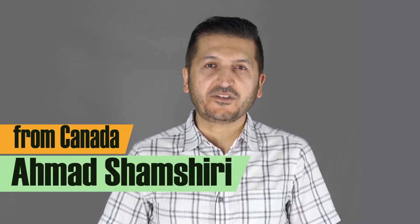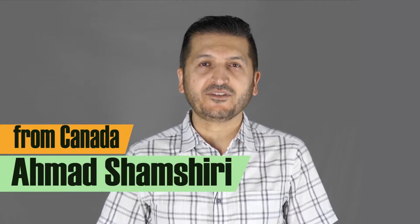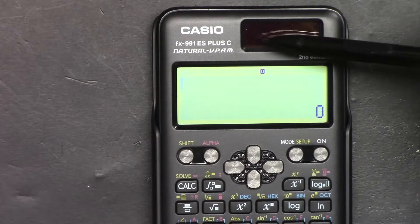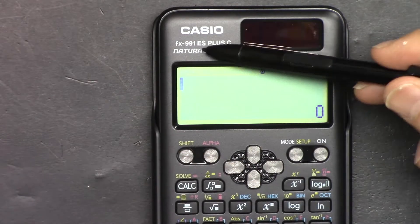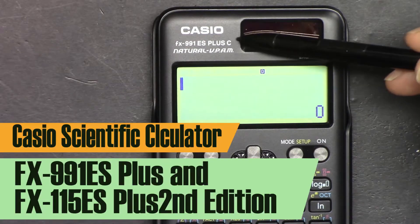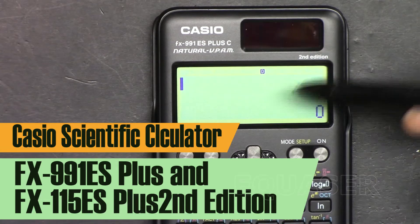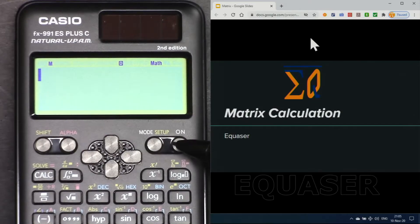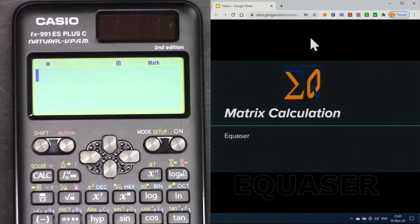Hi, welcome to a video tutorial from Equasor. My name is Ahmad Shamshiri. In this video we are going to use this Casio FX-991ES Plus second edition scientific calculator to do matrix calculations. Let's get started.